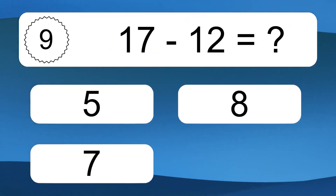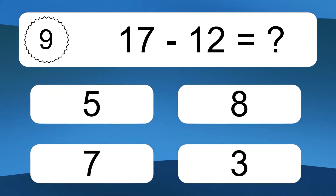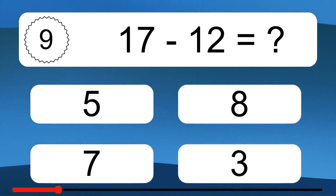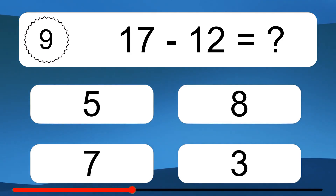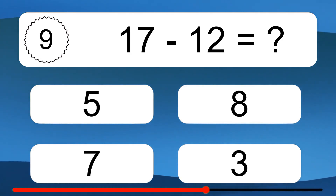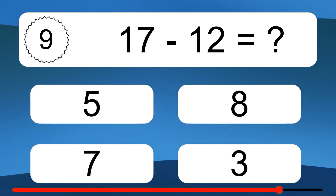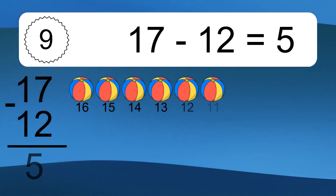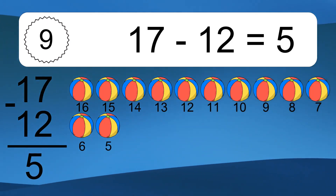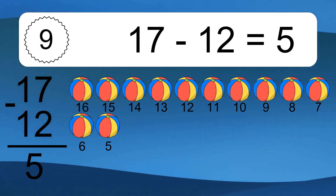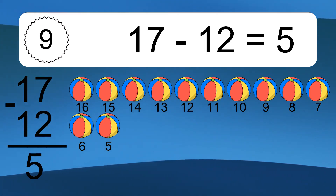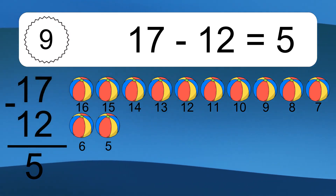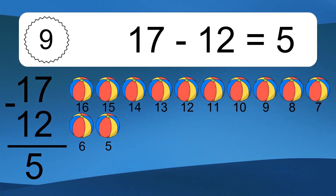17 minus 12 equals what? 17 minus 12 equals 5. Let's count it: 16, 15, 14, 13, 12, 11, 10, 9, 8, 7, 6, 5.